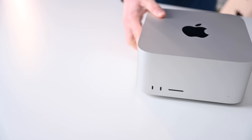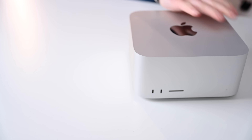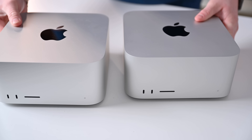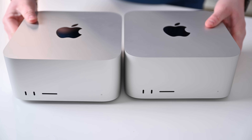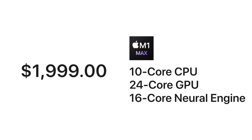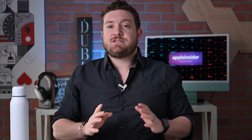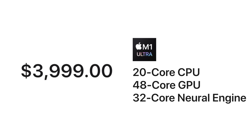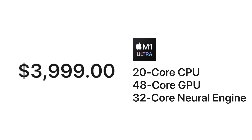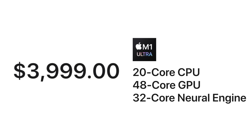In this video, I'm going to first walk you through the differences between these two versions of the machine, and then I'll give you some benchmarks. The Mac Studio with the M1 Max processor starts off at $1,999, and the Mac Studio with the M1 Ultra carries a starting price tag of $3,999, or $4,000.